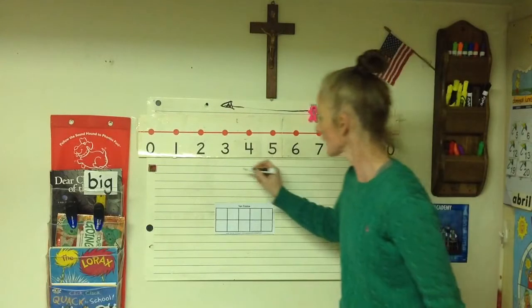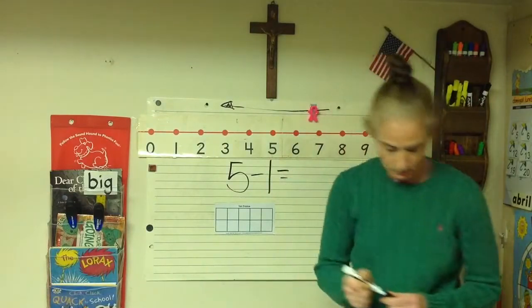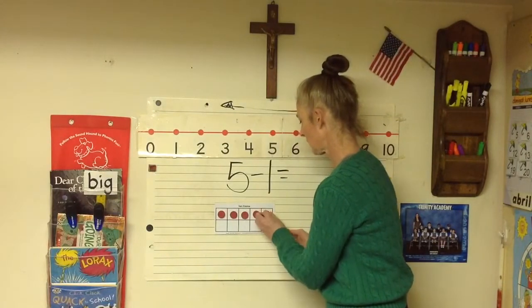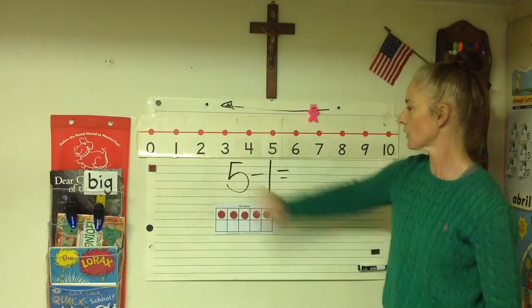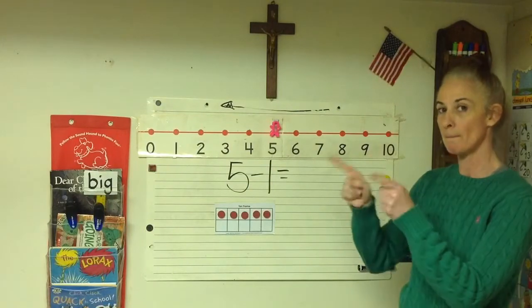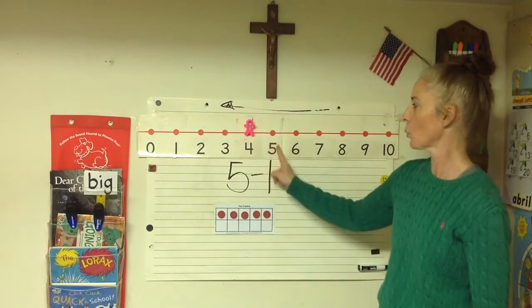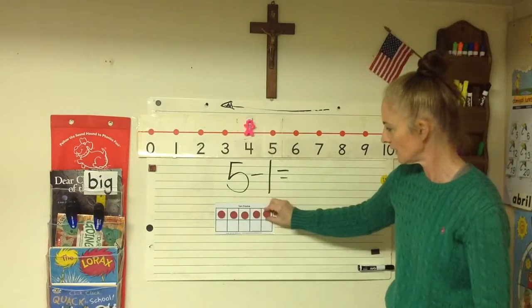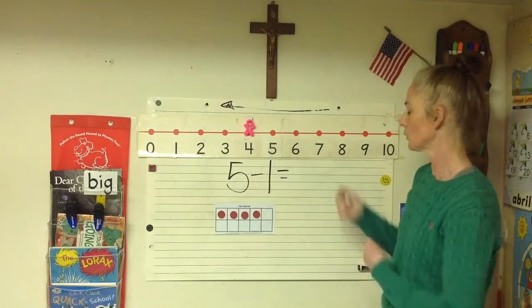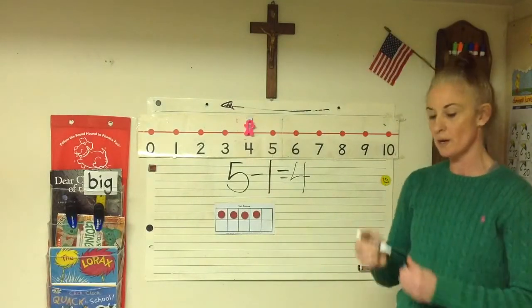Let's do five minus one equals. I have five in my ten frame for that starting set, and five on my number line. We're going to subtract and go back — five minus one, subtract and go back one. We landed on four. If I take one out of my ten frame, I still have four. So our difference: five minus one equals four.